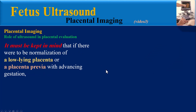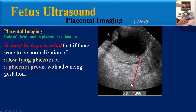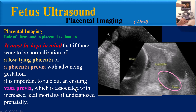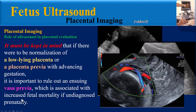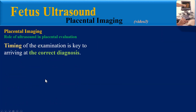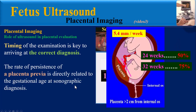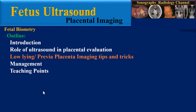In cases of persistence of placenta previa into the third trimester, it is critical to assess for possible placenta accreta spectrum. If there is normalization of a low-lying placenta or placenta previa with advancing gestation, it is important to rule out vasa previa, which is associated with increased fetal mortality if undiagnosed prenatally. Timing of the examination is key to arriving at the correct diagnosis — it is very important not to label a patient as having placenta previa prior to 16 weeks.